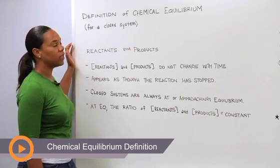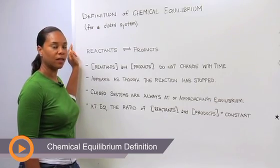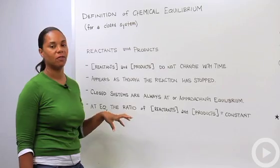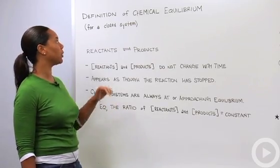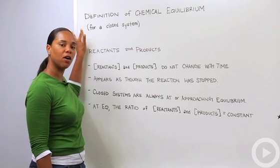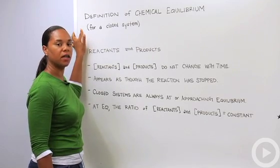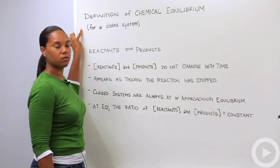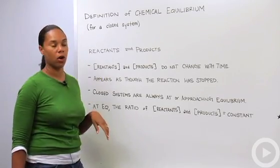So let's go ahead and talk about chemical equilibrium and first define what we mean by chemical equilibrium. The first important thing to note is that here we're only talking about a closed system. In another segment we'll deal with equilibrium for systems that are open to the environment.